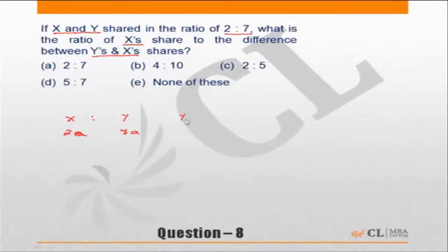So the difference between Y and X will be 5a. This becomes 2 is to 7 is to 5, but actually you did not need this item called a.